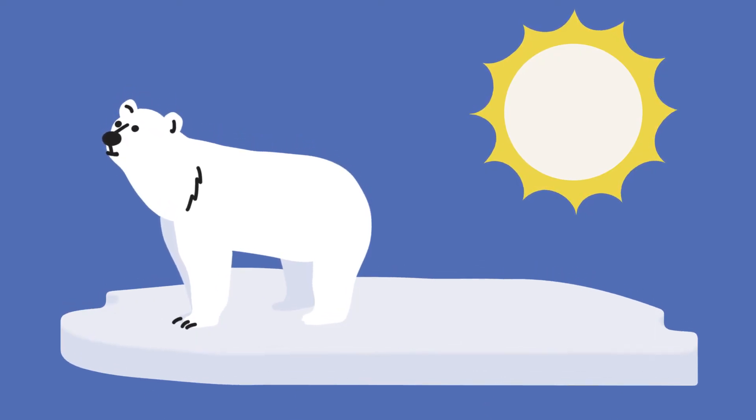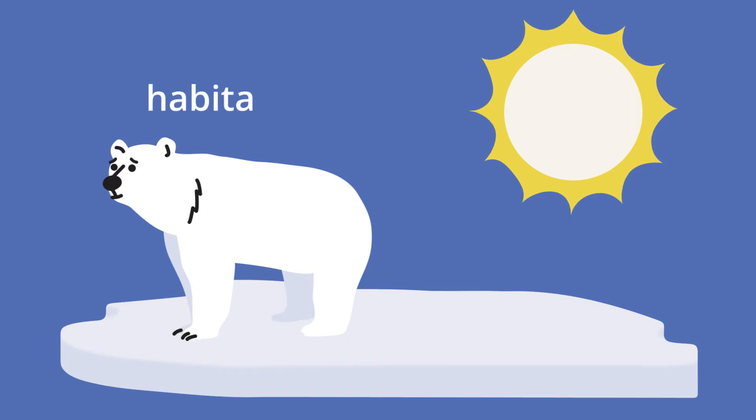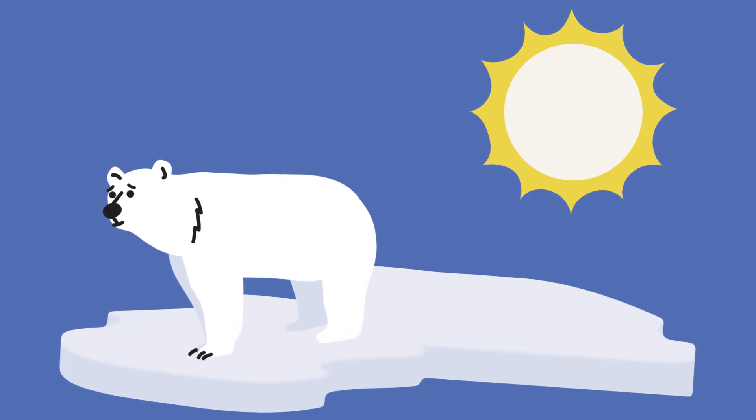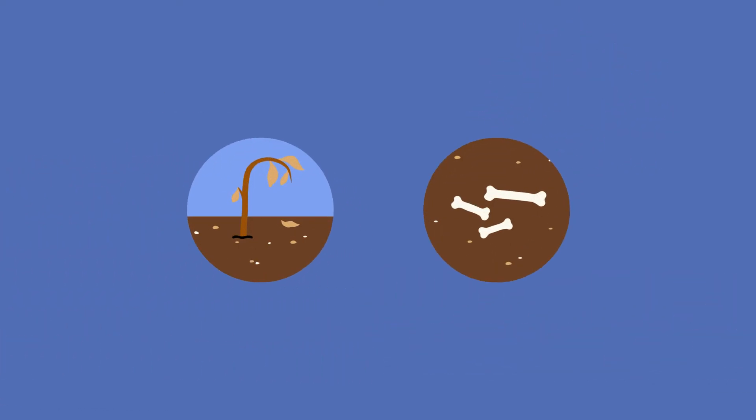The decrease in sea ice is causing Arctic animals to lose their habitat. As environments change, plants and animals die off.